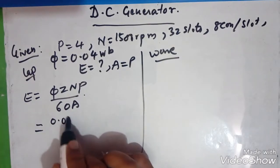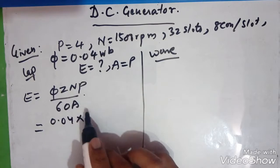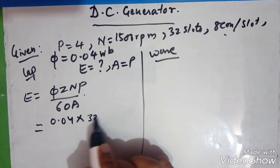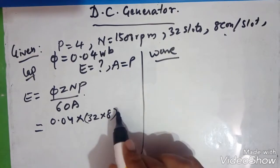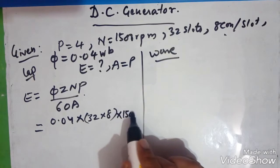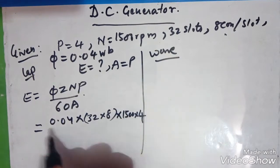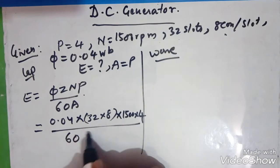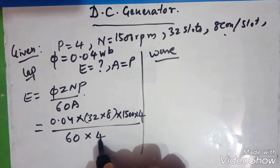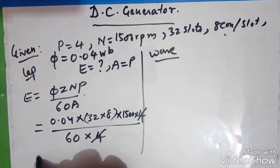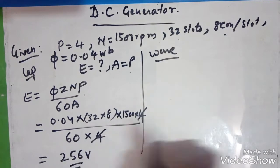E equals 0.04 into Z. Z is slots into conductors per slot, so 32 into 8. Then we write N, 1500. P is 4. 60 into A, where A is P, so it is 4. 4 and 4 cancel. So what you will get if you solve this? You will get 256 volts in the case of lap winding.